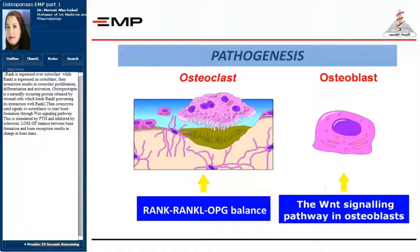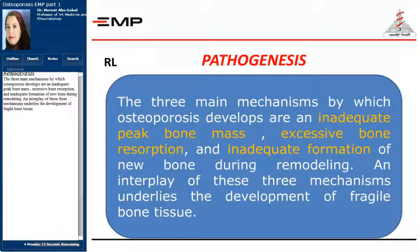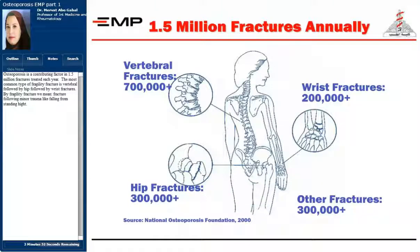Loss of balance between bone formation and bone resorption results in a change in bone mass. Regarding pathogenesis, the three main pathogenetic mechanisms by which osteoporosis develops are: an inadequate peak bone mass, excess bone resorption, and inadequate formation of new bone during remodeling. An interplay of these three mechanisms underlies the development of fragile bone tissue. Osteoporosis is a contributing factor in 1.5 billion fractures treated each year. The most common type of fragility fracture is vertebral, followed by hip, followed by wrist fractures.